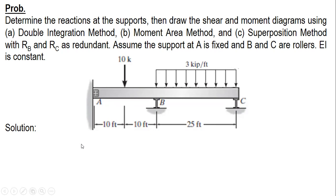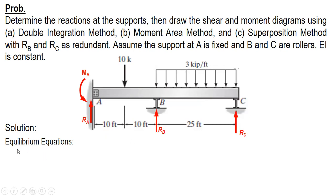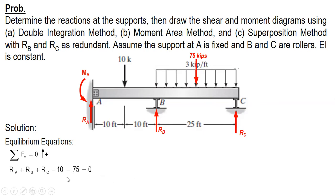You start with the equilibrium equations. Identify the reactions: RA for the horizontal is assumed zero since the external loads are vertical only. The reactions are MA, RB, and RC. The first condition is summation of vertical forces. For the uniform load, the resultant is the area under the load: 3 times 25 equals 75. So RA plus RB plus RC minus 10 minus 75 equals zero. After simplifying, this is equation number one.